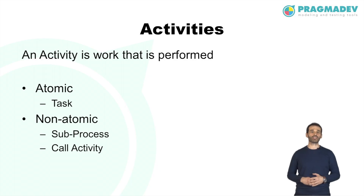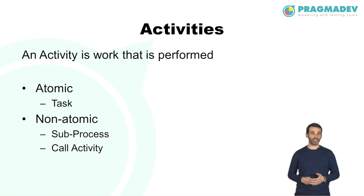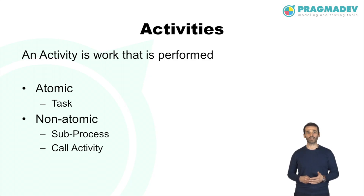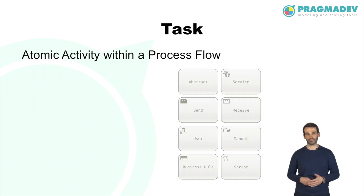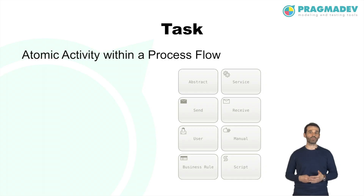Activities represent points in a process flow where work is performed. They are the executable elements of a BPMN process. An activity can be atomic or non-atomic. Tasks are atomic activities, while non-atomic activities include sub-processes and call activities. A task is an atomic activity within a process flow, used when the work cannot be broken down to a final level of detail.